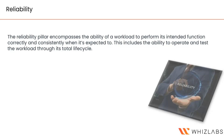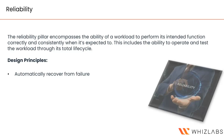The reliability pillar encompasses the ability of a workload to perform its intended function correctly and consistently. You determine how reliable the architecture and application are, then take measures to make it more reliable. The first design principle is to recover automatically from failure — have processes and tools in place to monitor workloads for key performance indicators, and use automation to trigger responses when a threshold is breached. For example, when traffic exceeds a certain number of connections, your auto scaling group kicks in and adds instances.